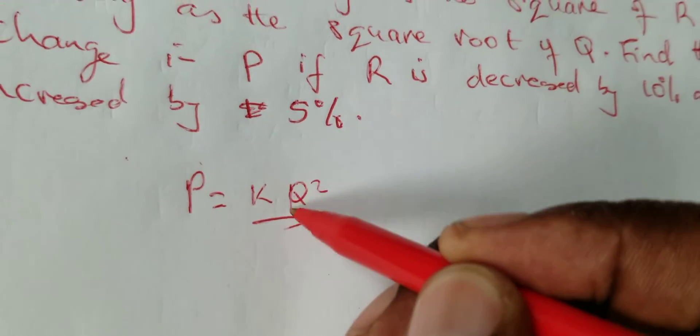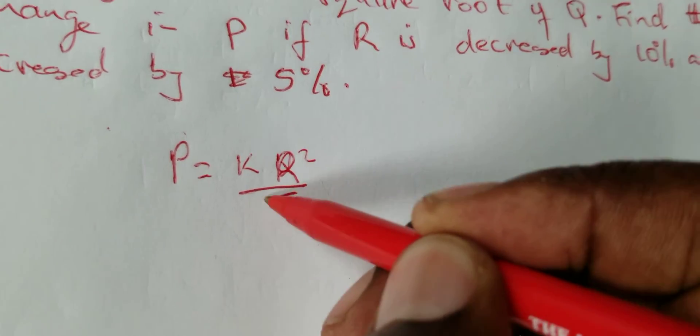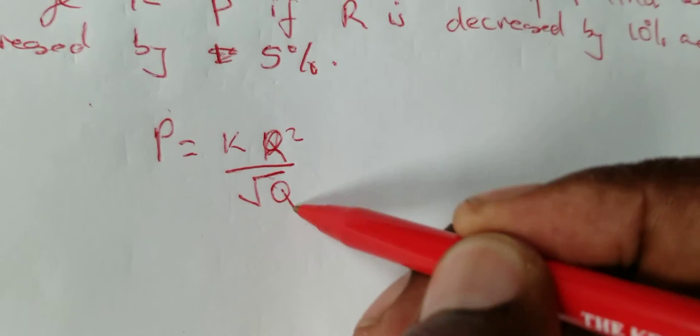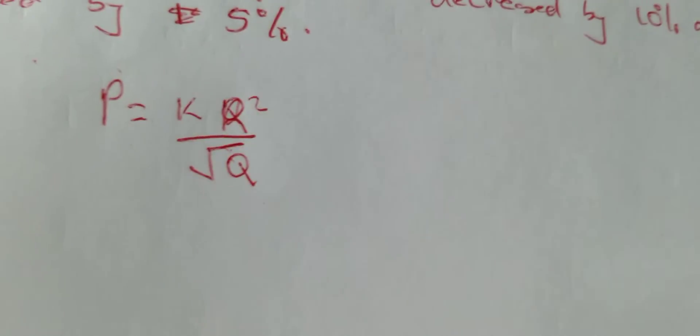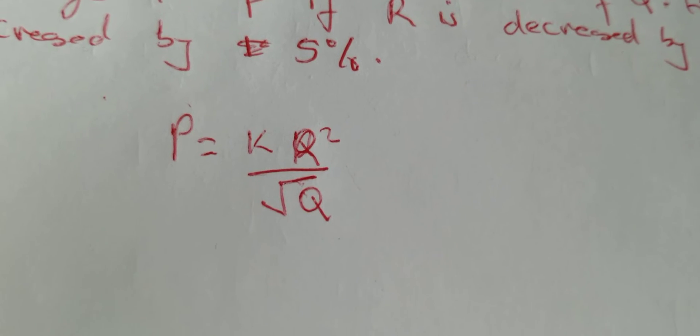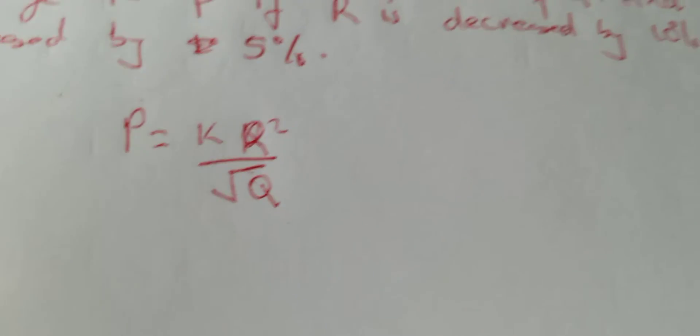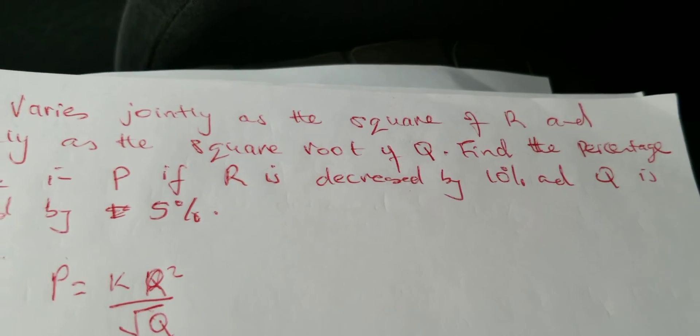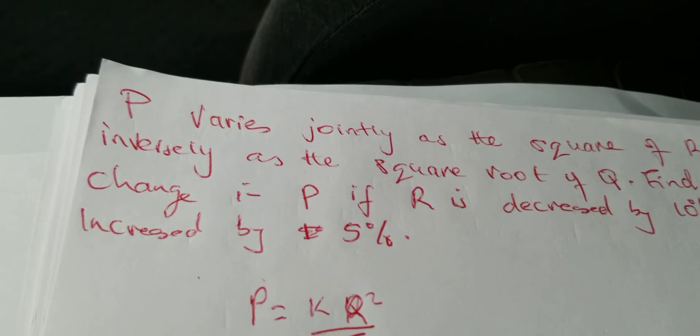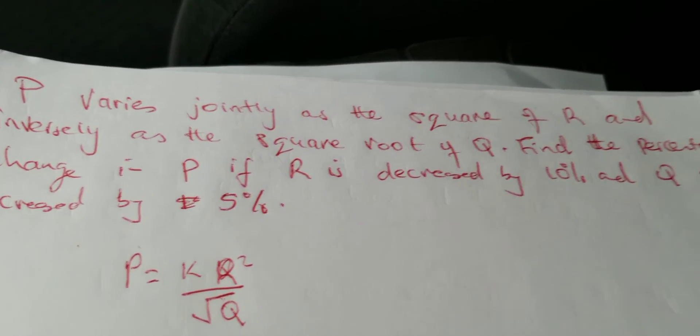So that is our general equation, that is the first P, the original P. Then you're told to find the percentage change in P if R is decreased by 10 percent.